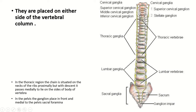The ganglia are placed on either side of the vertebral column. In the thoracic region they are first present in front of the neck of the rib, and gradually shift medially to lie at the side of the vertebra. In the pelvis, the ganglia are in front of the pelvic surface of the sacrum, just medial to the pelvic sacral foramina. In the lower part, the two chains unite to form a tiny ganglion known as the ganglion impar.